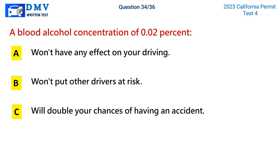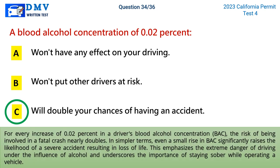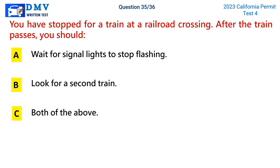Question 34: A blood alcohol concentration of 0.02. A) won't have any effect on your driving, B) won't put other drivers at risk, C) will double your chances of having an accident. The correct answer is C. For every increase of 0.02 in a driver's blood alcohol concentration (BAC), the risk of being involved in a fatal crash nearly doubles. Even a small rise in BAC significantly raises the likelihood of a severe accident, emphasizing the extreme danger of driving under the influence.